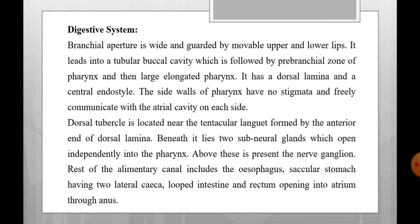Regarding the digestive system: the branchial aperture is wide and guarded by movable upper and lower lips acting as sphincters. It leads into a tubular buccal cavity followed by a prebranchial zone of pharynx and then a large elongated pharynx. It has a dorsal lamina and a central endostyle. The side walls of the pharynx have no stigmata and freely communicate with the atrial cavity on each side. The dorsal tubercle is located near the tentacular lancet, formed by the anterior end of the dorsal lamina. Beneath it lie two subneural glands which open independently into the pharynx, and above these is present the nerve ganglion. The rest of the alimentary canal includes the esophagus, saccular stomach having two lateral caeca, looped intestine, and rectum opening into the atrium through the anus.